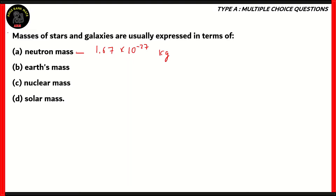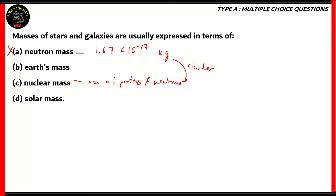Therefore, we cannot use the neutron mass for stars and galaxies because they are infinitely larger than a neutron. Option C, nuclear mass, again depends on the mass of protons and neutrons, so it will be similar in order to the mass of the neutron. Therefore, option C is also incorrect because the masses of stars and galaxies are infinitely larger.